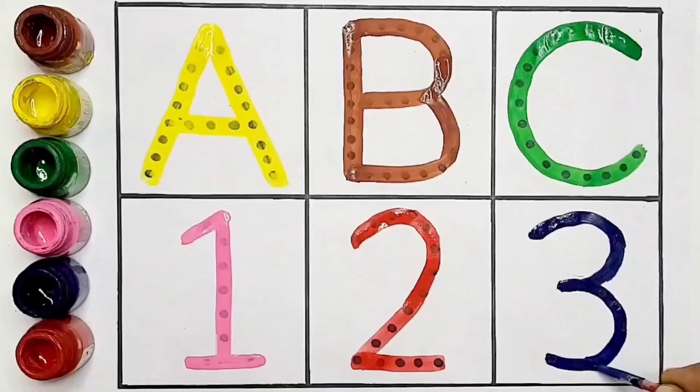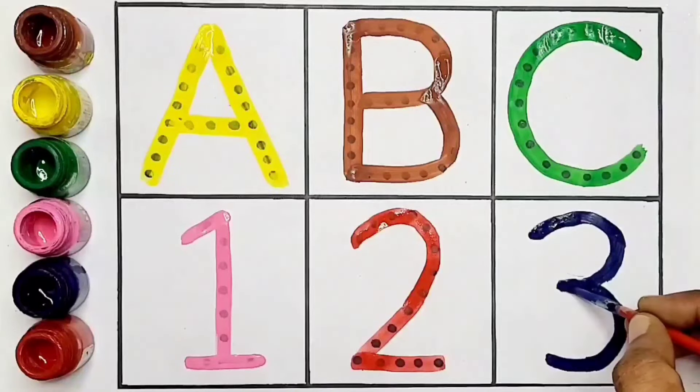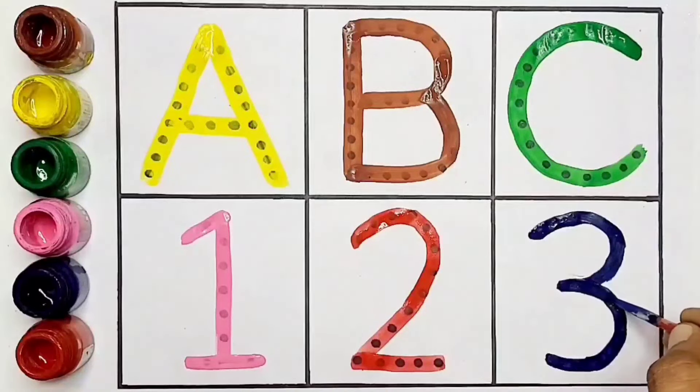This is brown color. Next, yellow. This is yellow. Next one, green. This is green color, kids.